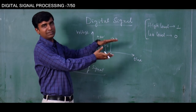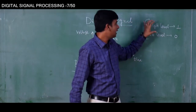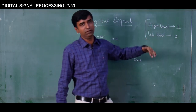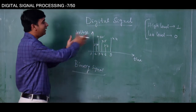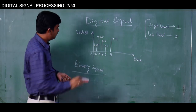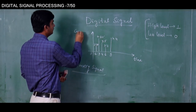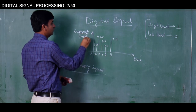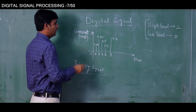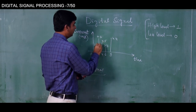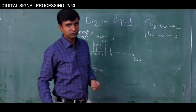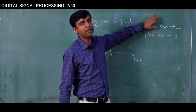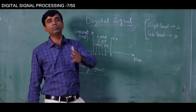If you are considering a voltage signal, then this high level means high voltage level and low level means low voltage level. Similarly, if you are considering a current signal, the unit may be in milliamperes. All these values might be in milliamperes. This signal can be converted into a binary signal where high current level is represented by 1 and low current level is represented by 0.